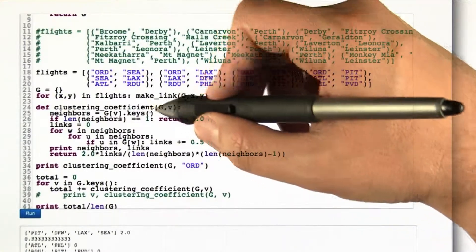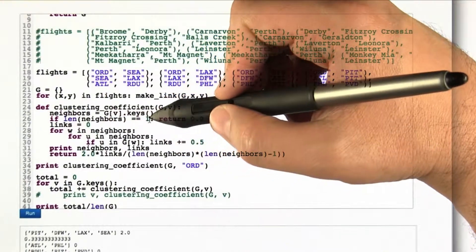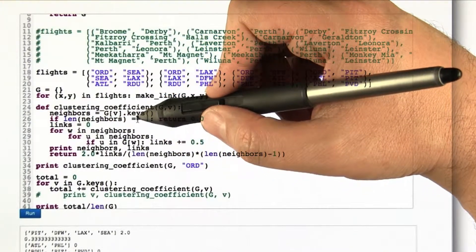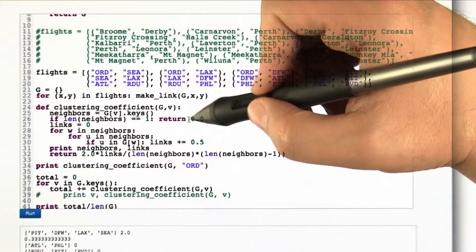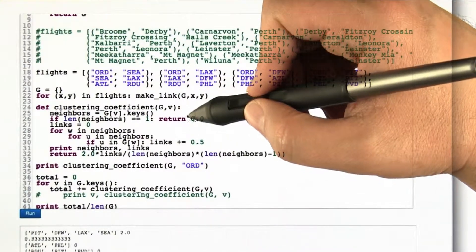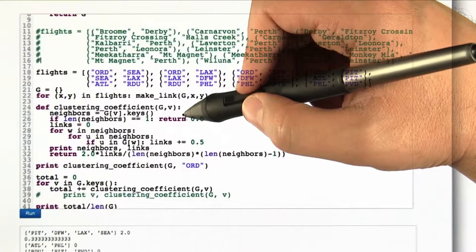Then to compute the clustering coefficient for the graph at some node, we list out the neighbors. If there's only one neighbor, it turns out to be very hard to compute the clustering coefficient. So we have to give it some kind of value. I chose 0. It actually kind of matters, but 0 seems like a reasonable choice.